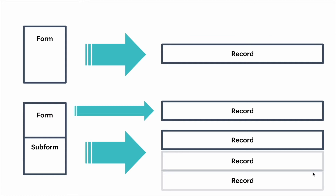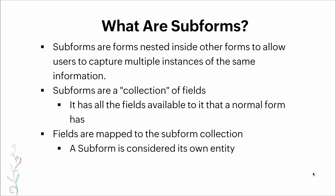That might not be very clear, so let me explain further. Subforms are forms nested inside other forms that allow users to capture multiple instances of the same information. Subforms are collections of fields — they have all the fields available to them just as a normal form has. These fields are mapped to the subform collection, and a subform is considered its own entity.